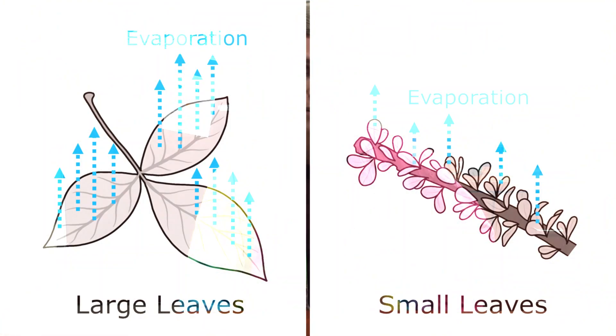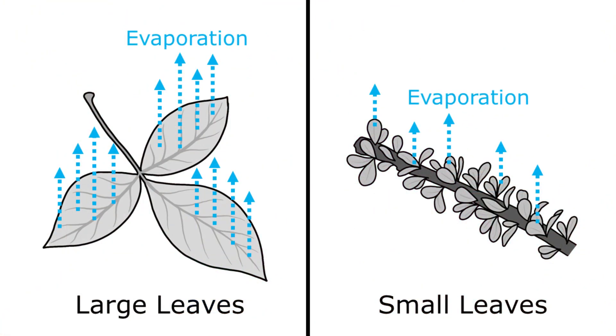Plants use energy from the sun to make their own food, and most plants absorb sunlight in their leaves. Having large broad leaves allows a plant to absorb more sunlight. But water also evaporates from the leaves of plants, and having broad leaves increases the amount of water that is lost through evaporation.